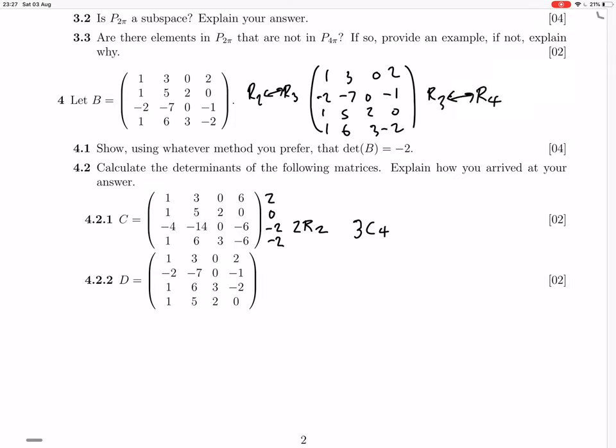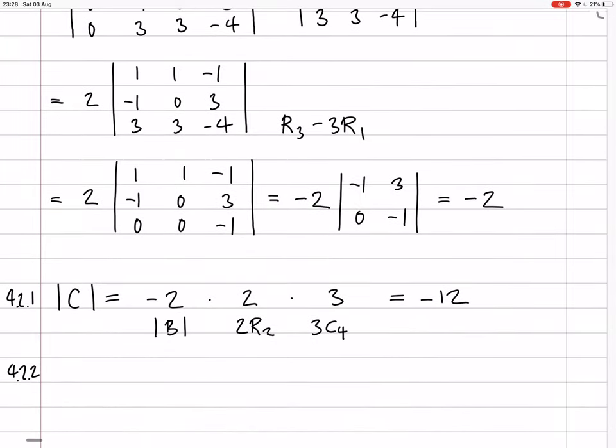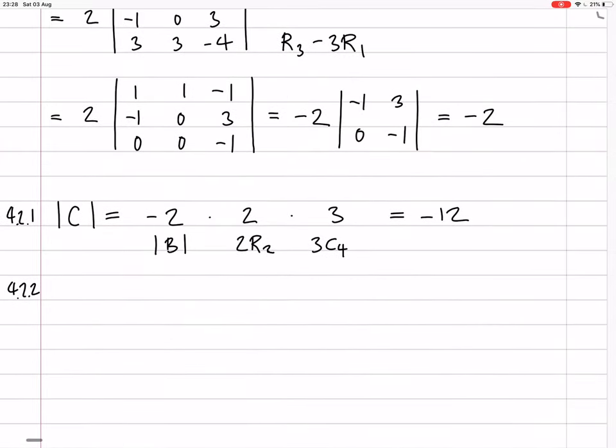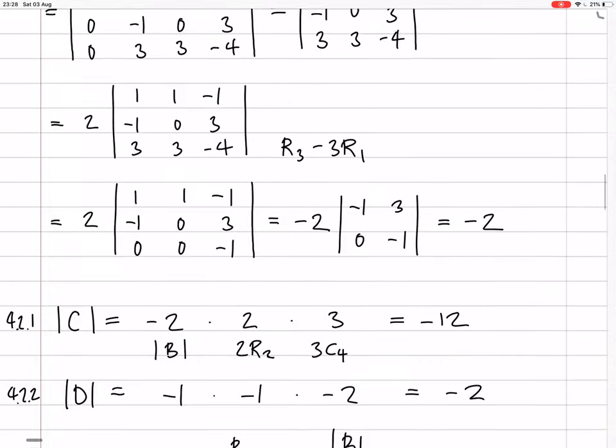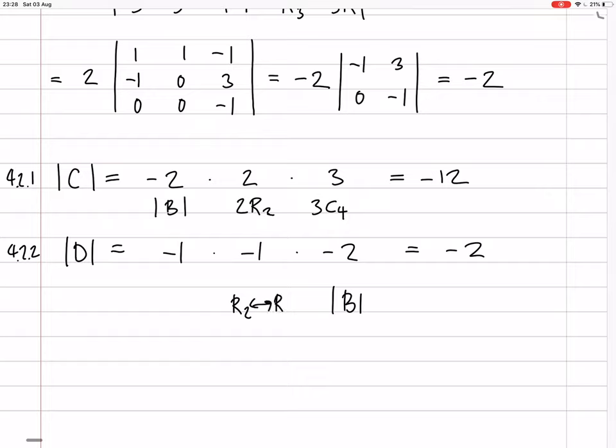And so the determinant won't change because it's times by minus 1 twice. Okay. Oh, this wasn't D here. That was, that one was called C, wasn't it? Yes. Okay. So D is equal to minus 1 times minus 1 times the original determinant, which is minus 2, which is, so the whole thing is minus 2. Because you had the original determinant of B, and then you swapped rows 2 and 3, and then 3 and 4. Swapped rows 2 and 3, and then you swapped rows 3 and 4. Okay.